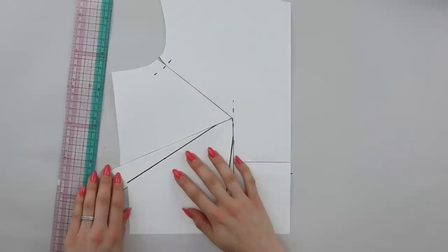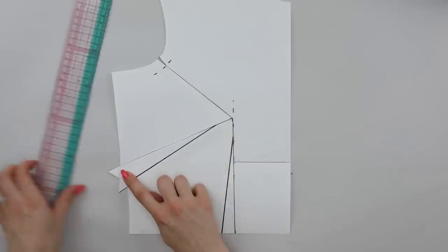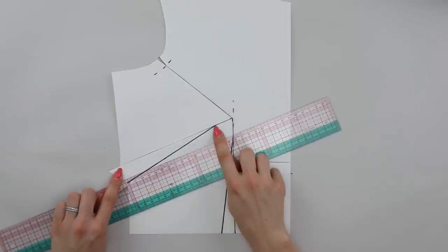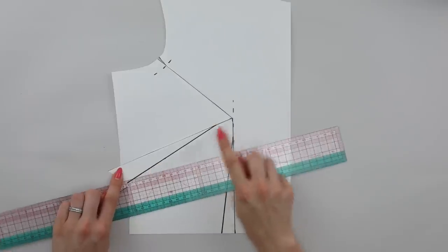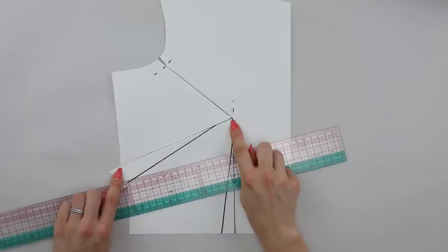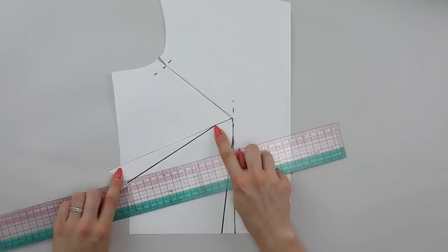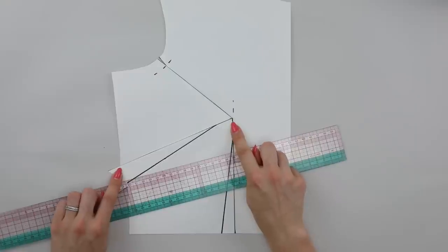Now for a simple fix when you first created your small bust adjustment, I would recommend drawing in the old dart leg to the dart point as it currently exists. Now the dart point or the position of the dart point may or may not be in the right place for your bust depending on the location of your bust apex.